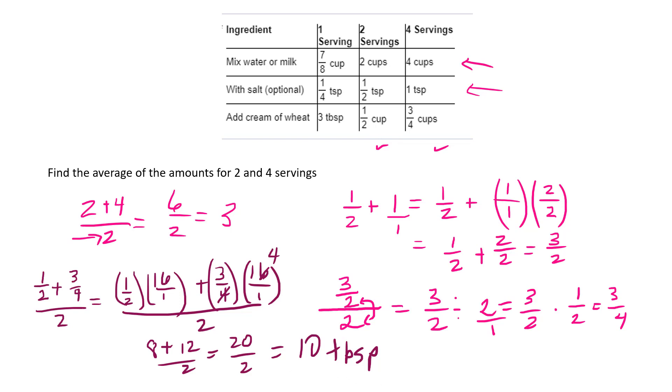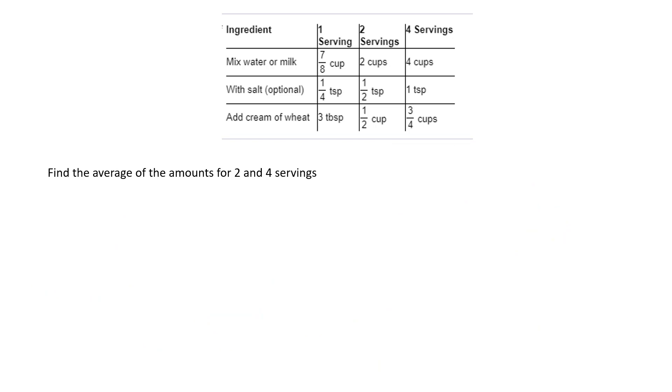All right, let's look at the next thing. We want to subtract the amounts for 1 serving from the amounts for 4 servings. So I'm looking at the 4 servings minus the 1 serving.